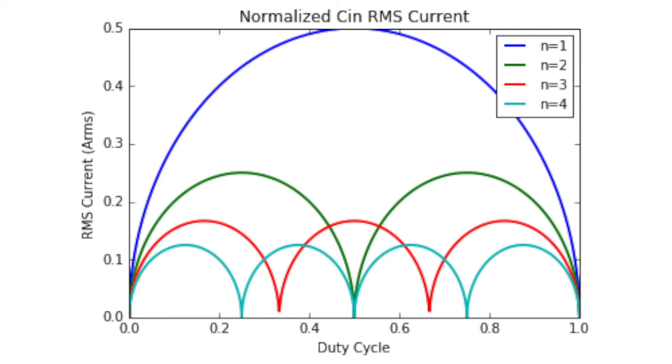It's important to note though that while mathematically you can design to operate at one of these zero current points, in reality this is impossible. You're always going to need input capacitors whether it's due to noise in the system, line and load transients, or the natural variation in the duty cycle from both the controller architecture and the processor demanding different output voltages for different modes of operation.